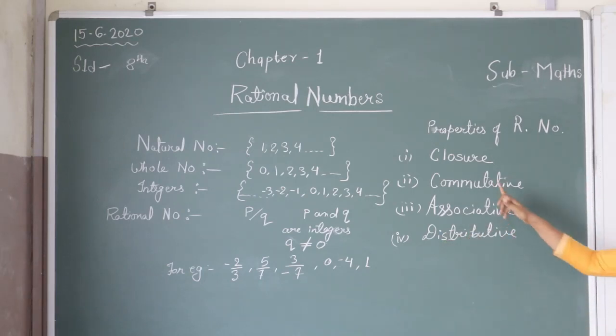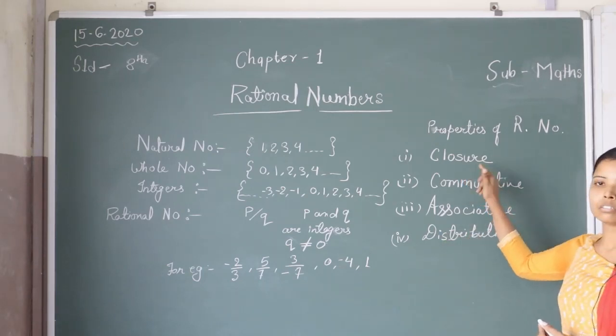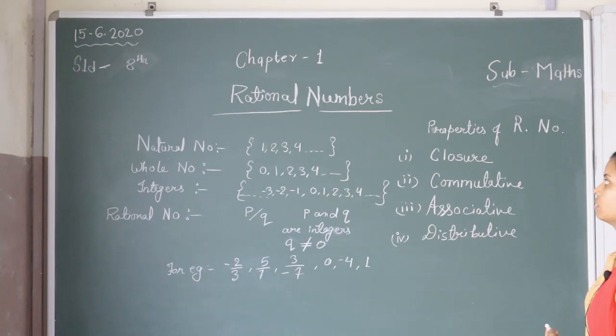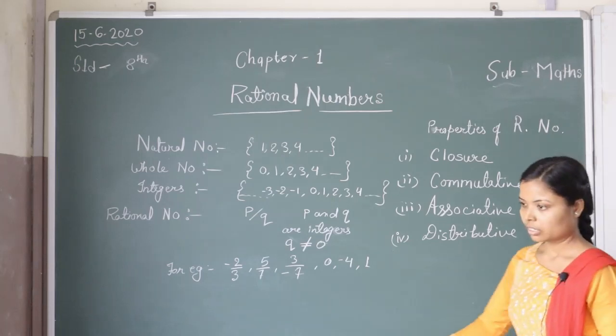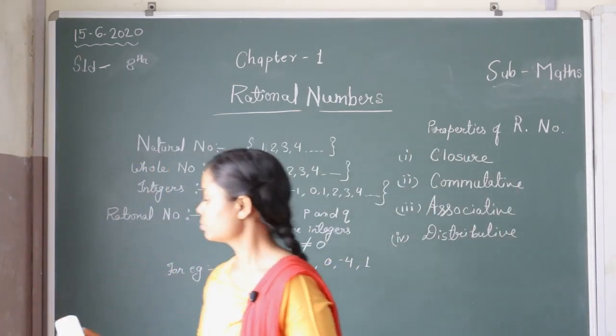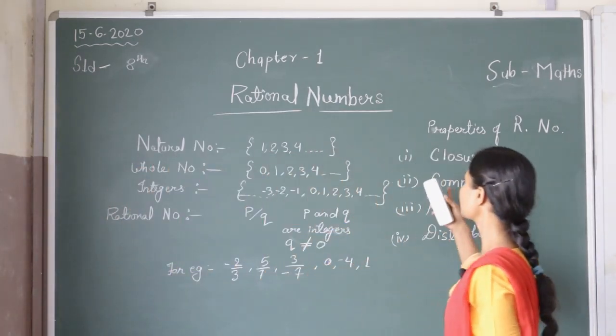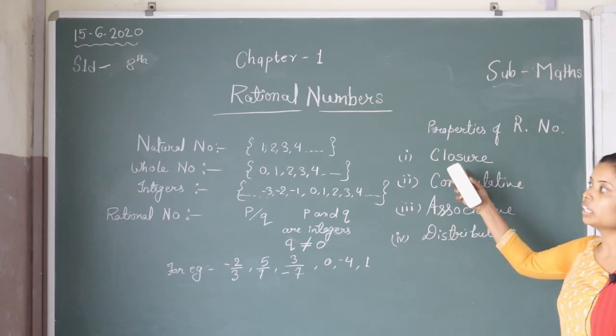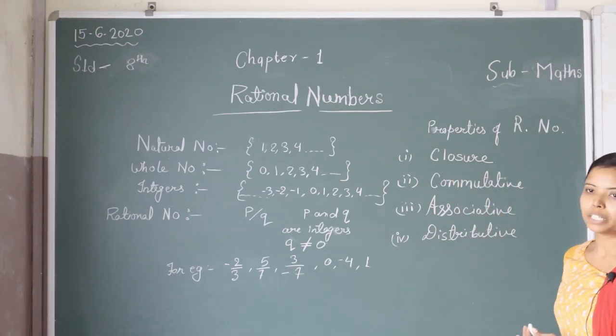Firstly, we will learn the first property: closure. To understand this property, we will make a table.